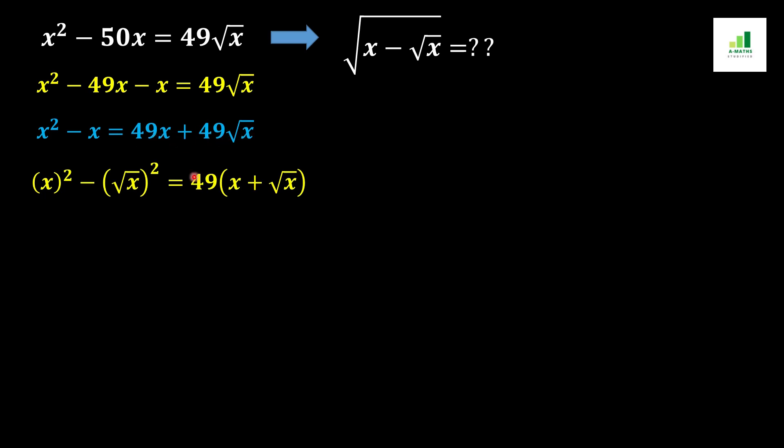In the next step, we take 49 as a common factor from the right side of the equation, giving us 49 times (x + √x) as the right side.